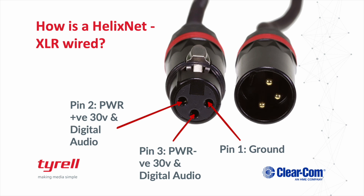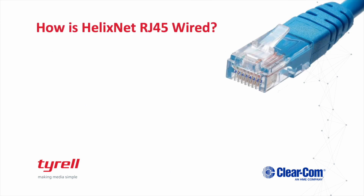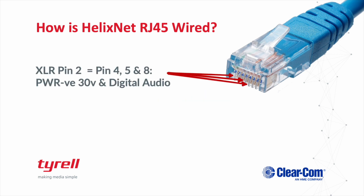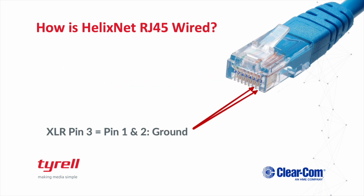There are also some very nice additions such as visual displays to channels and menus for ease of configuration. And much like two-wire, this system allows for multiple devices such as belt packs, speaker stations, and remote master stations to be powered using the same topologies utilized in analog party line systems. HelixNet can also work on pre-existing Ethernet infrastructure. It uses the same wiring standard we saw with XLR; however, multiple cables are now paired together. XLR pin 1 connects to pins 3, 6, and 7 and carries the positive 30 volts as well as the first channel of digital audio. XLR pin 2 connects to pins 4, 5, and 8 and carries the negative 30 volts as well as the second channel of digital audio. And XLR pin 3 connects to pins 1 and 2 and connects to ground.